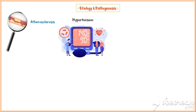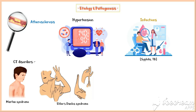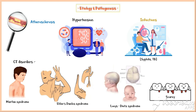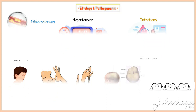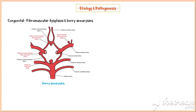Atherosclerosis and hypertension are the two most common causes of aneurysms. In addition, infections such as syphilis and tuberculosis, congenital connective tissue disorders like Marfan syndrome, Ehlers-Danlos syndrome, and Loeys-Dietz syndrome, as well as acquired connective tissue abnormalities caused by vitamin C deficiency such as scurvy, can also lead to aneurysm formation. Other congenital causes include fibromuscular dysplasia and inherited berry aneurysms of the brain. Vascular trauma and vasculitis can also cause formation of aneurysms.